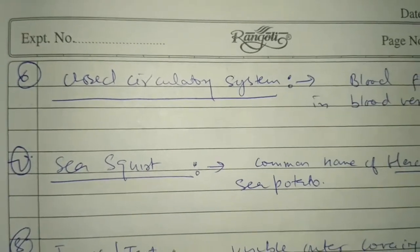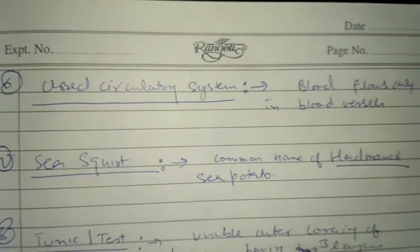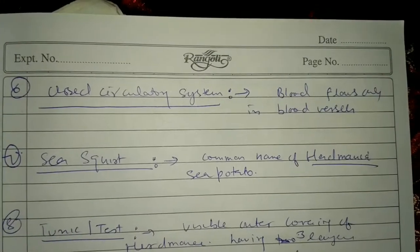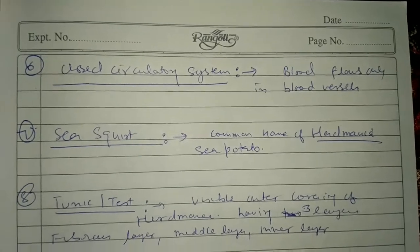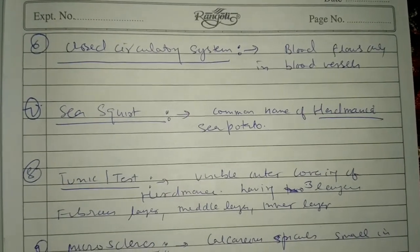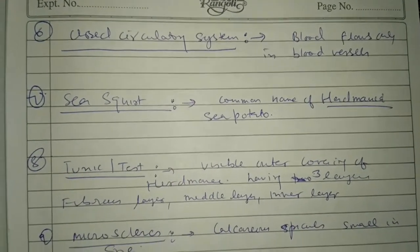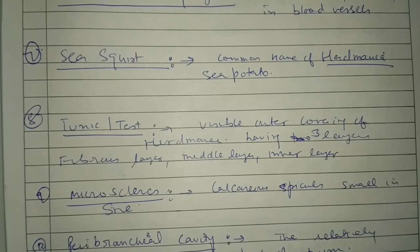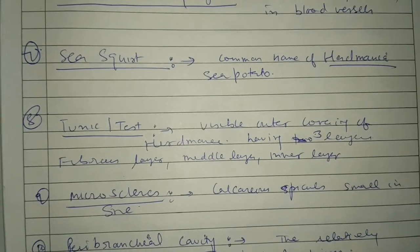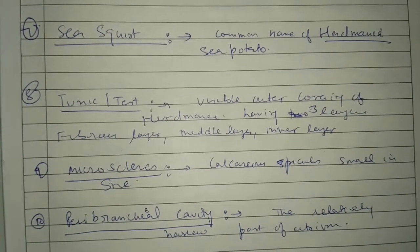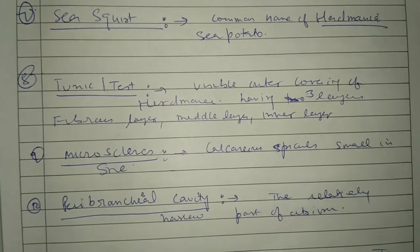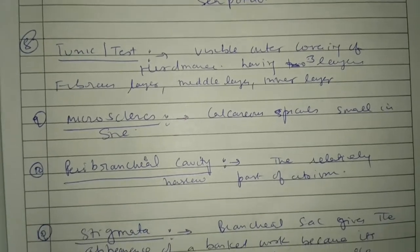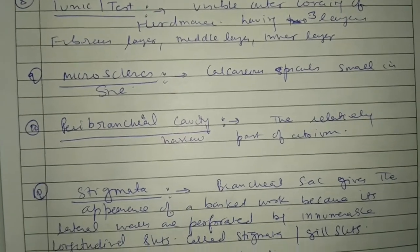Next, closed circulatory system. Next, tunicates, test, micro cyclitis. Next, pericardial cavity. Next, stigmata.